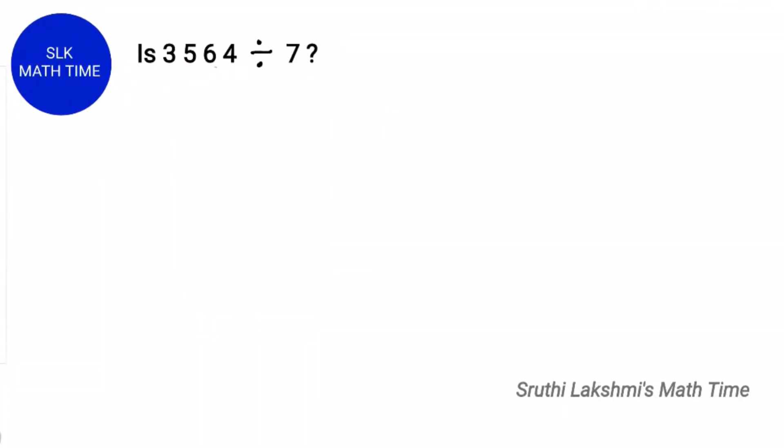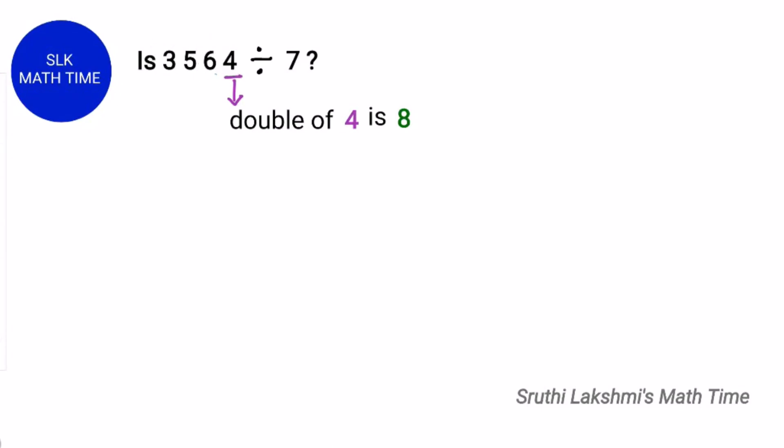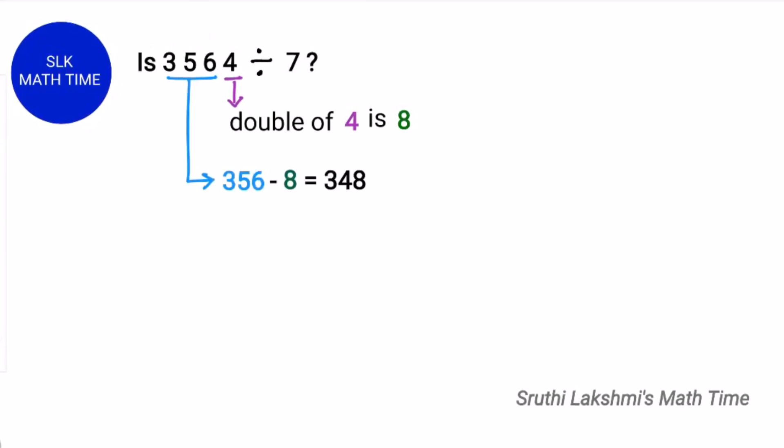Let's see another example. Is 3564 divisible by 7? The last digit here is 4. So the double of 4 is 8. So we have to subtract 8 from the rest of the digits. So 356 minus 8 which is 348.